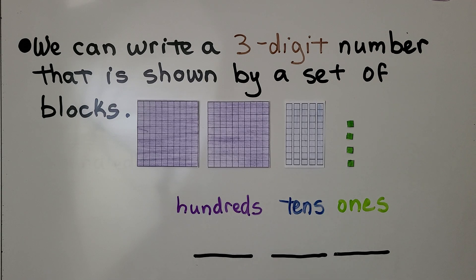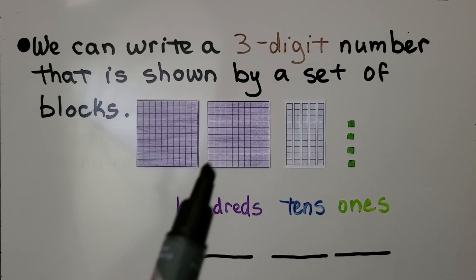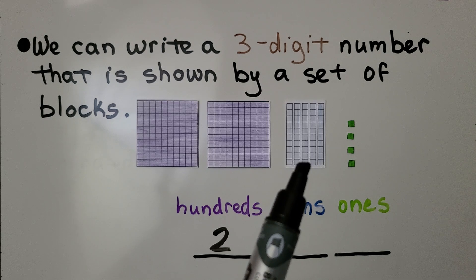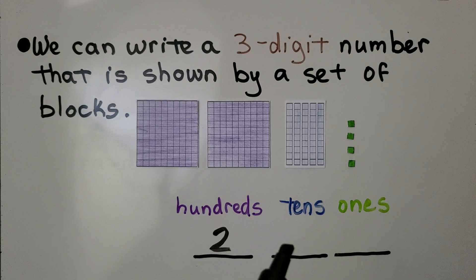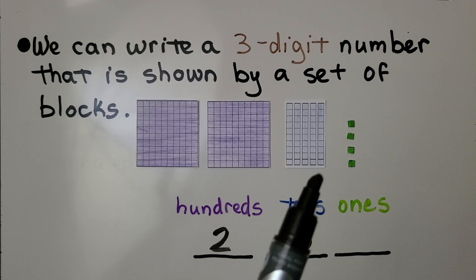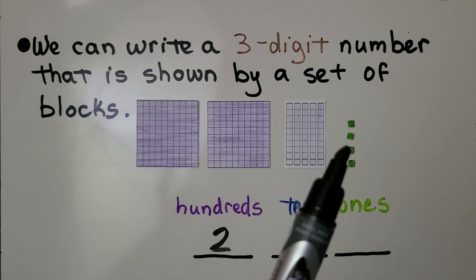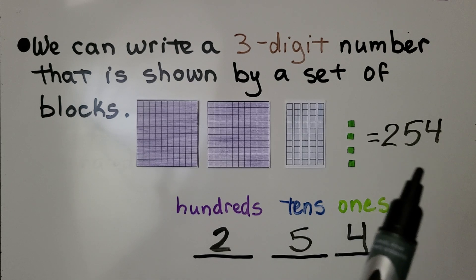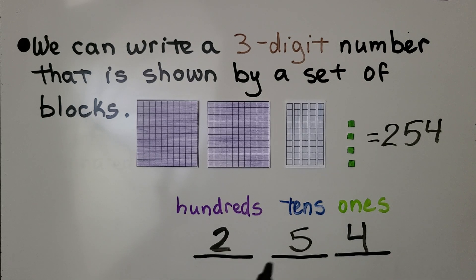We look at how many hundreds blocks we have. We have one, two — we write a two for the hundreds. We count how many tens there are: one, two, three, four, five tens. We count how many ones there are: one, two, three, four ones. We wrote the number 254 — two hundreds, five tens, four ones.